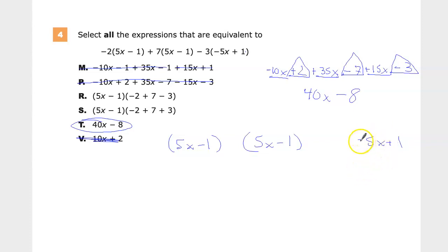We can change those signs using another distributive. So we'll just do negative 1. Negative 1 times 5x is negative 5x. Negative 1 times negative 1 is positive 1. Now they're all the same, right?